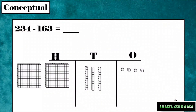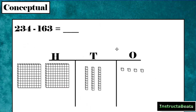Let's take a look at conceptually what's happening when we're subtracting. I've gone ahead and set up our minuend, which is the number that we are subtracting from. We have two hundreds here, which represents the two in our hundreds place. We have three tens to represent the three in our tens place, and we have four ones to represent the four in our ones place.